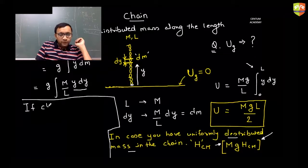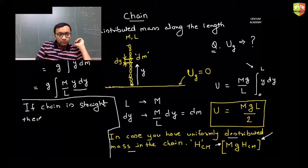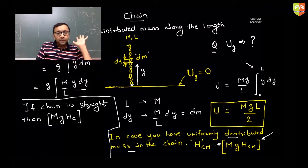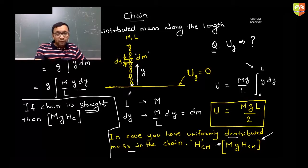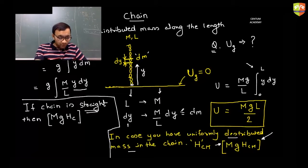Thumb rule: if the chain is straight, then m·g times the height of the center of the chain gives the potential energy. For a chain of total length l and total mass m, for a small length dy the mass is (mass per length)·dy. That's how you apply it.